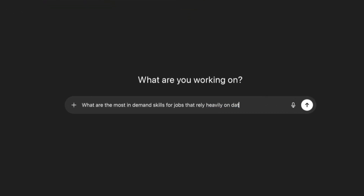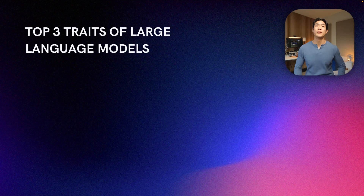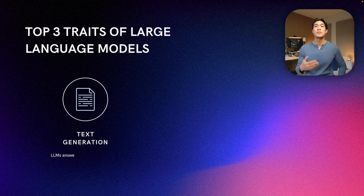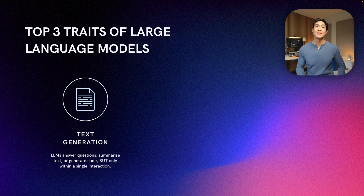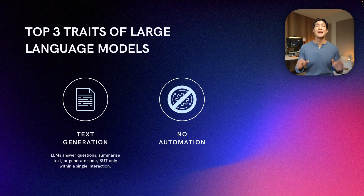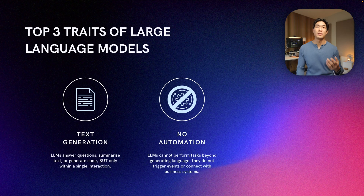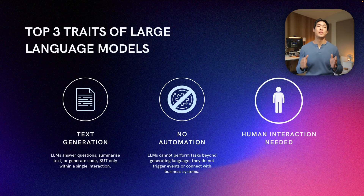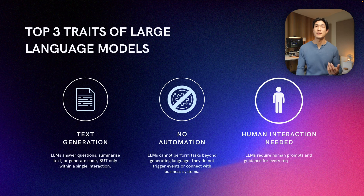The top three traits of LLMs are: number one, text generation — LLMs answer questions, summarize text, or generate code, but only within a single interaction. Number two, no automation — LLMs cannot perform tasks beyond generating language; they do not trigger events or connect with business systems. And number three, human interaction needed — LLMs require human prompts and guidance for every request; they do not perform tasks on their own.